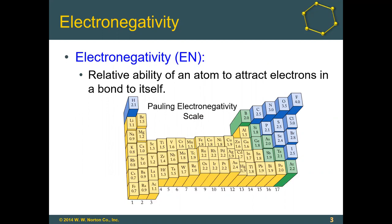Electronegativity is a measure of the relative ability of an atom to attract electrons in a bond to itself. One reason fluorine's electronegativity is so high is because it's such a small atom relative to others, with so many protons in its nucleus. Notice that electronegativity decreases as you move away from fluorine — these are the values we use to determine whether bonds are polar.